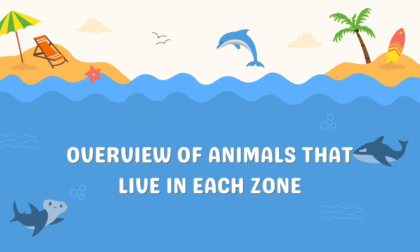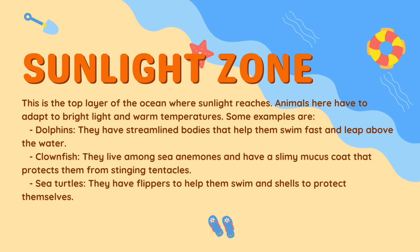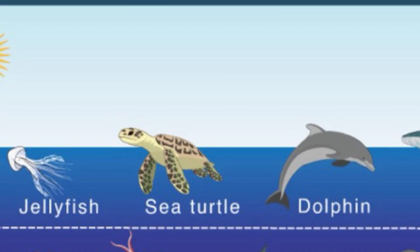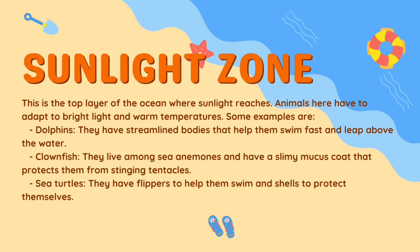Now it's time to overview the animals that live in each zone. First, the sunlight zone — this is the top layer of the ocean where sunlight reaches. Animals here have to adapt to bright light and warm temperatures. Some examples are dolphins, which have streamlined bodies that help them swim fast and leap above the water.